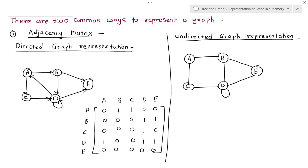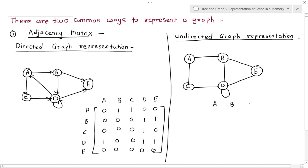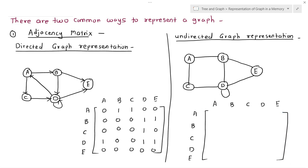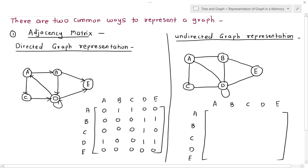Now let's do the same for an undirected graph. Again there are 5 nodes, so we write 5 rows and 5 columns: A, B, C, D, and E. Since this is an undirected graph, there is no specific direction shown — there is simply a path between connected nodes. Starting from node A: A is connected to B, D, and C, so we write 1 for A-to-B, A-to-D, and A-to-C. A-to-A and A-to-E are 0.